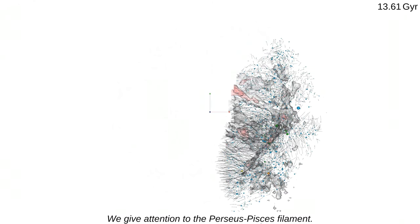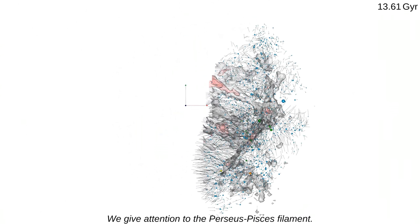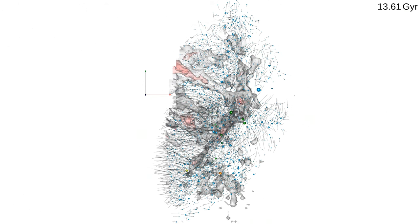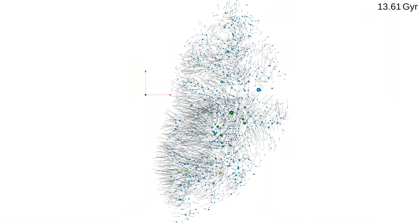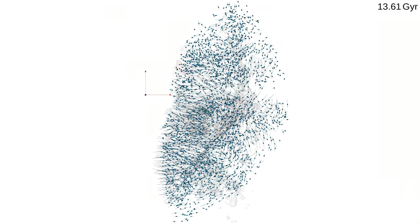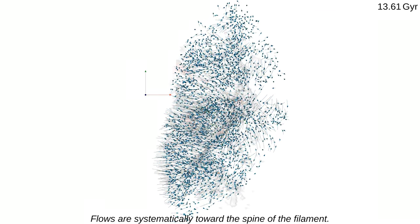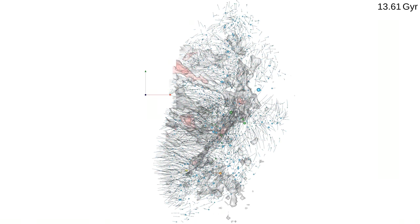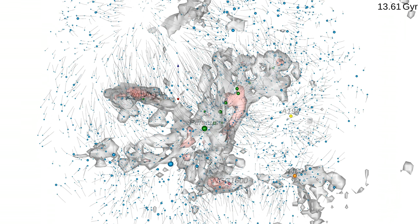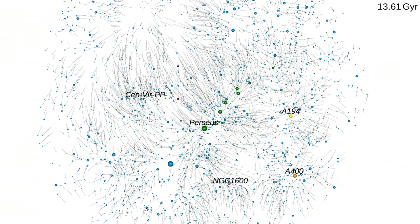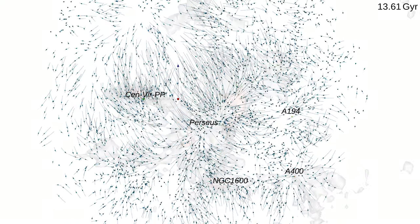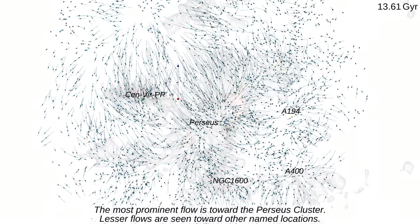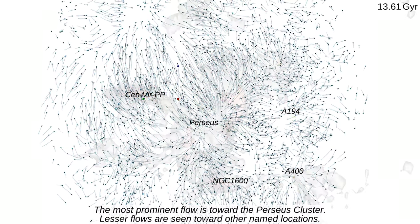We turn attention to the Perseus-Pisces filament. Flows are systematically toward the spine of the filament. The most prominent flow is toward the Perseus cluster. Lesser flows are seen toward other named locations.